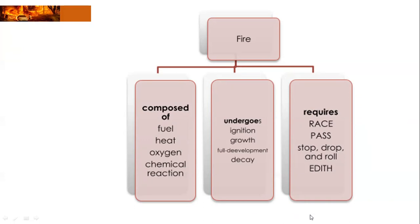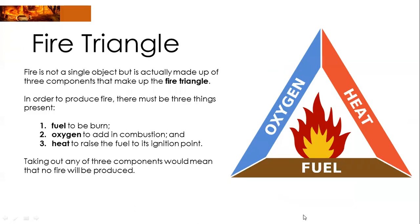Let us start first with composition. There's what we call the fire triangle — a diagram or illustration that shows the three components that make up fire. Without these three components, fire is impossible to happen. We have fuel to burn, oxygen to aid in combustion, and heat to raise the fuel to its ignition point. Fuel is not just LPG or gasoline, but even flammable materials such as paper and wood — anything that can intensify fire. So those are the three components: fuel, oxygen, and heat.